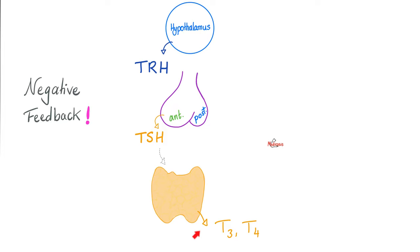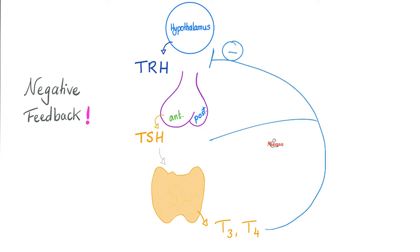What if we secreted too much thyroid hormone? Don't worry about it — negative feedback. This excessive thyroid hormone is going to inhibit the TRH from the hypothalamus, and it's going to inhibit the TSH from the anterior pituitary.